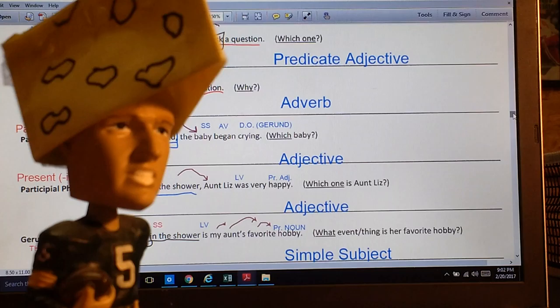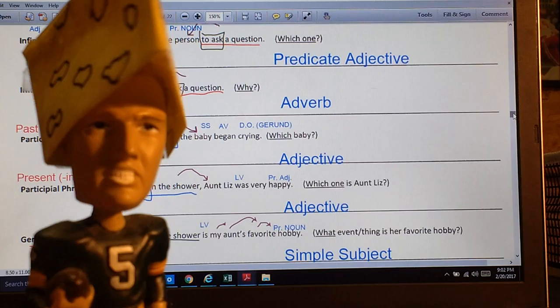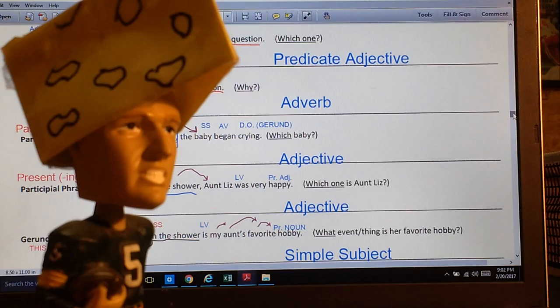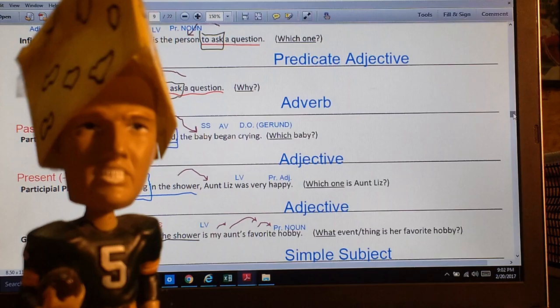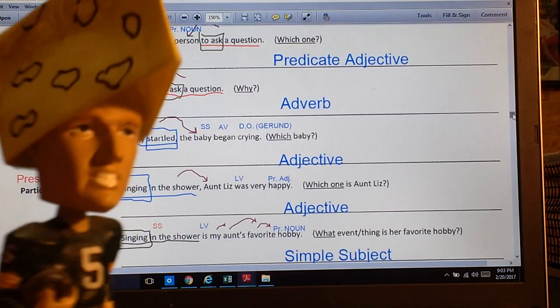The other type of verbal that we're going to talk about is a participle or a participial phrase. Now a participle can be in the present, ending in ing, or in the past, ending in ed. And these usually have things attached to them, like adjectives or adverbs or prepositional phrases.